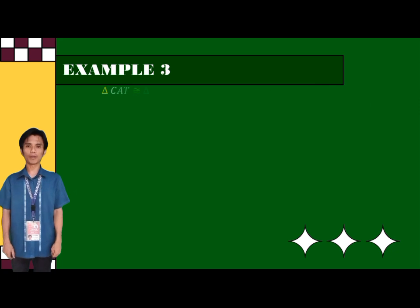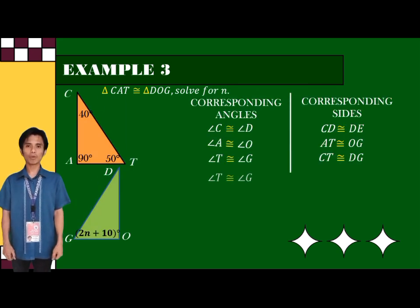And for our third example, we have triangle CAT is congruent to triangle DOG. Now, we are going to solve for the value of N.